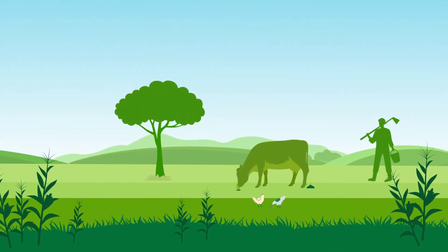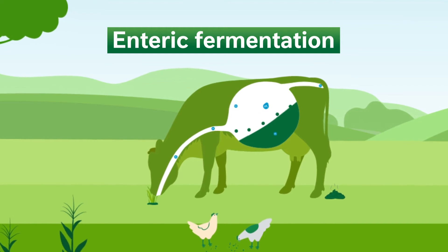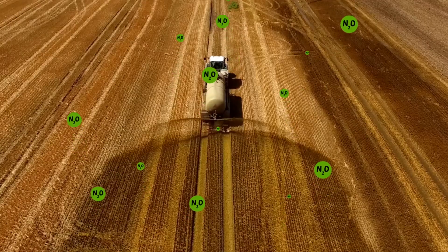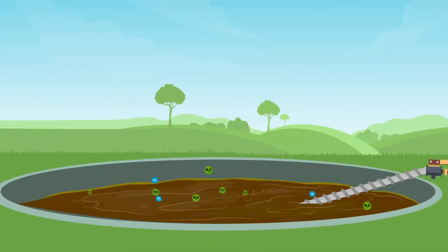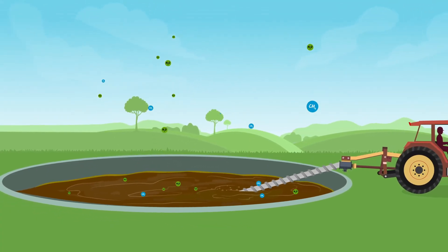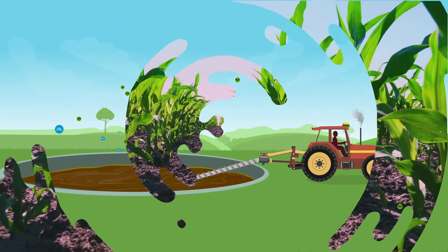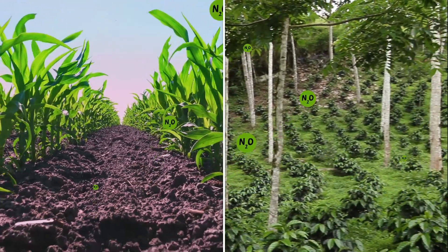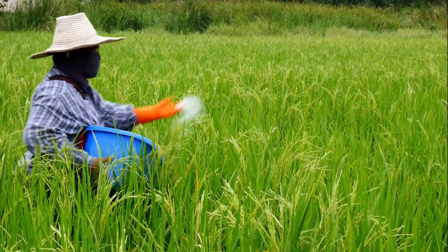In farms focused on livestock, the highest emissions come from enteric fermentation, nitrous oxide emissions from manure applied to fields and pastures, and to a lesser extent methane and nitrous oxide emissions from manure storage.